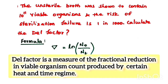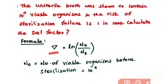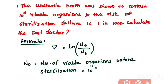The del factor is a measure of the fractional reduction in viable organism count produced by a certain heat and time regime. The formula to calculate del factor is: del = ln(N0 / Nt), where N0 is the number of viable organisms before sterilization.